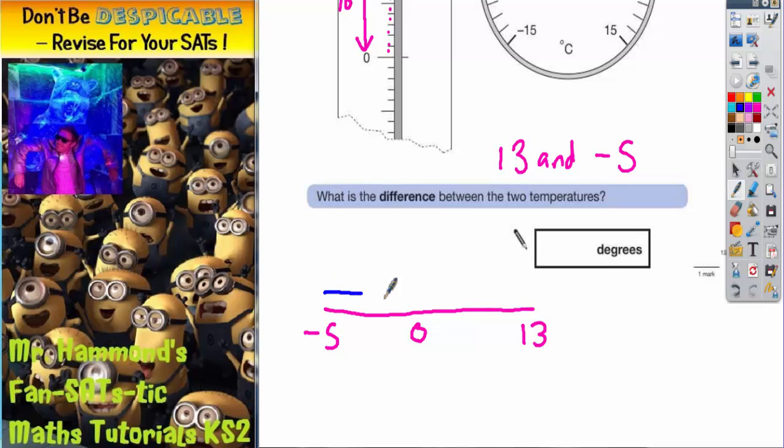Now this is where the easy bit comes in. The difference from minus five to zero would be five and the difference from zero to 13 would be 13. All you've got to do now is put those two differences together. So the total difference would be this five plus this 13. Five and 13 makes 18. So your final answer is 18 degrees.